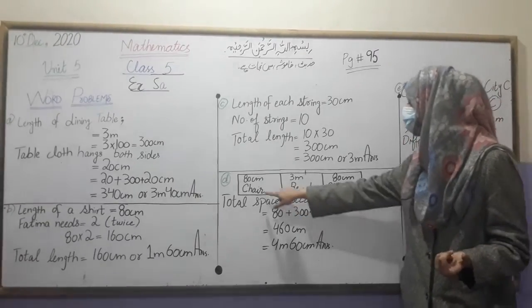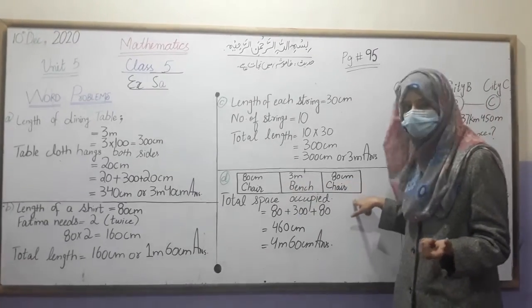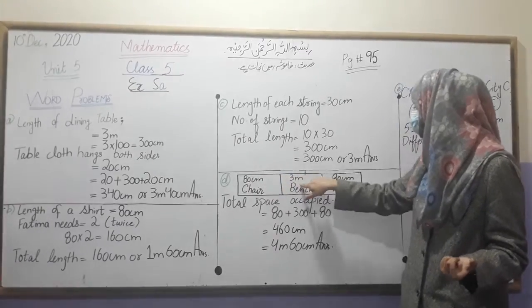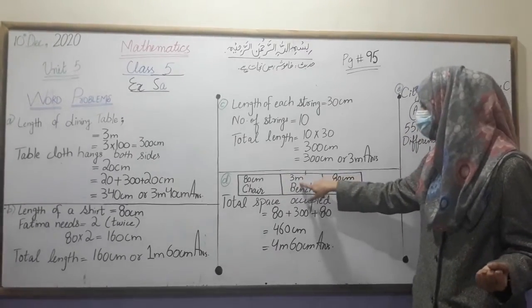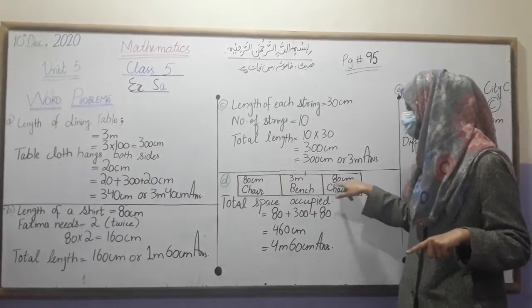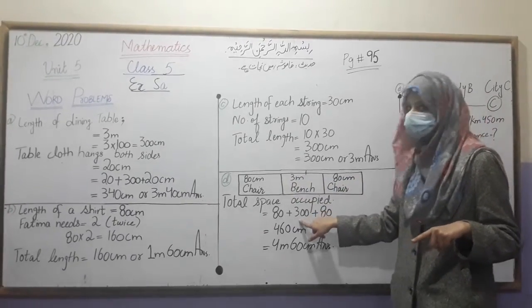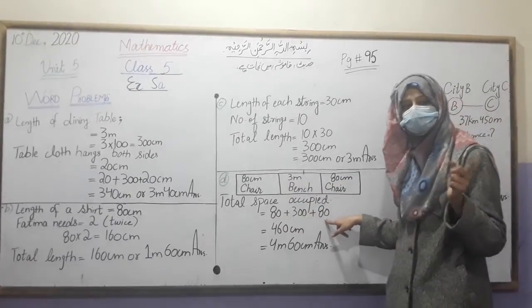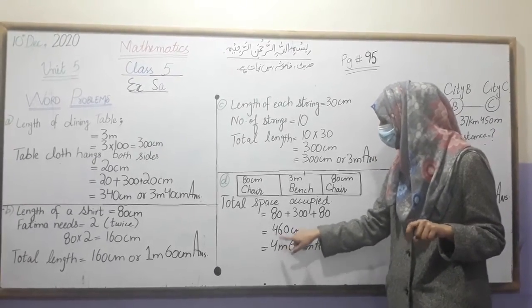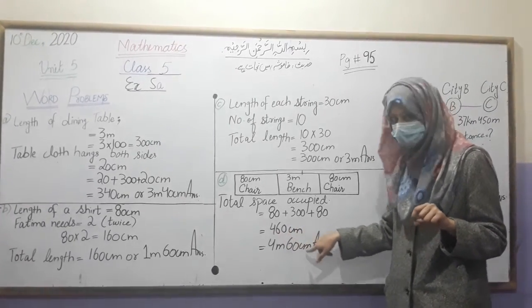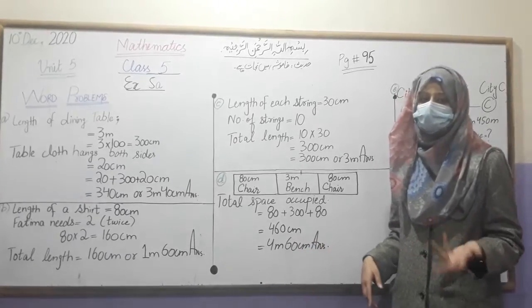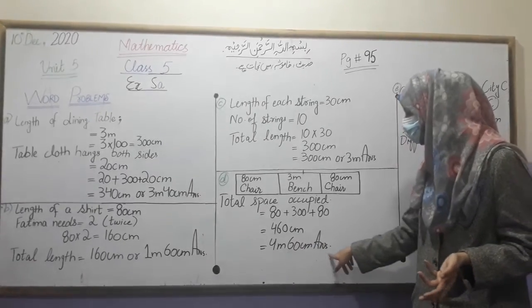We do the same process. Since the units are centimeters and meters, we convert: 3 meters becomes 300 centimeters. We then add all the units together since they are now the same. Our result is 4 meters and 60 centimeters, which is our final answer.